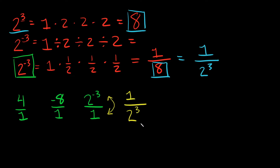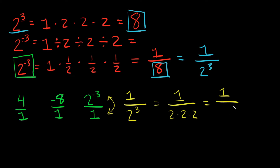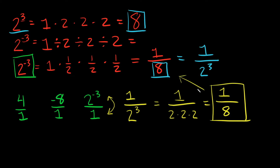Done, that's it. And then if we have to solve this, we can. So we write this as 1 over 2 cubed, which is 1 over 2 times 2 times 2, which equals 1/8. Which is the exact same answer as before. That's how you deal with a negative exponent.